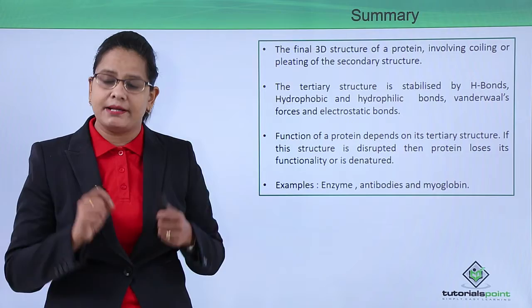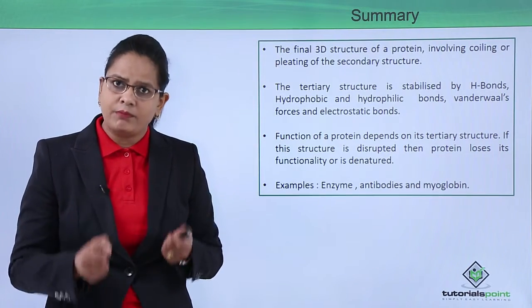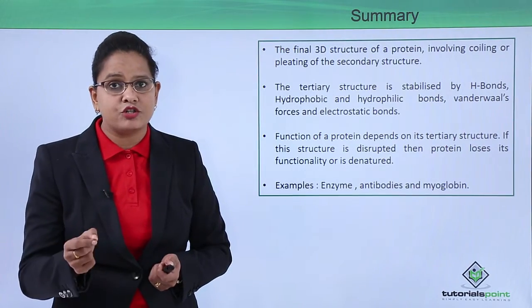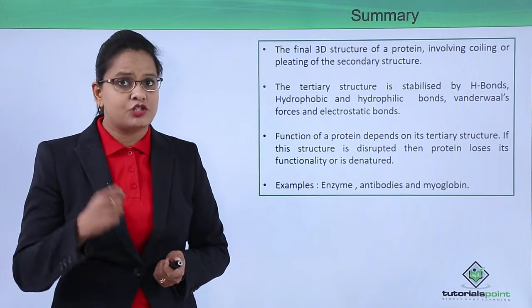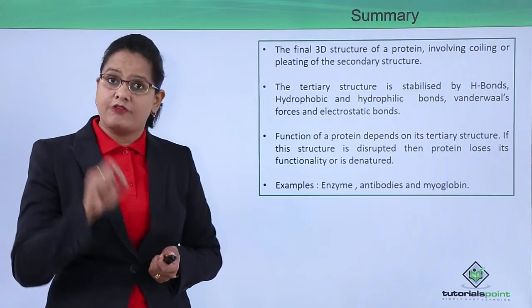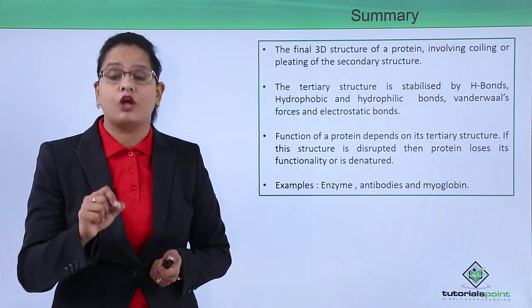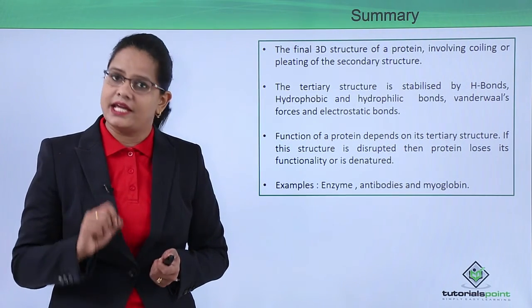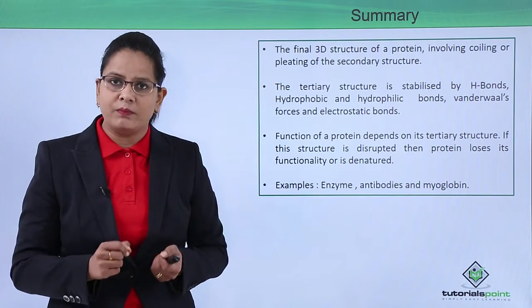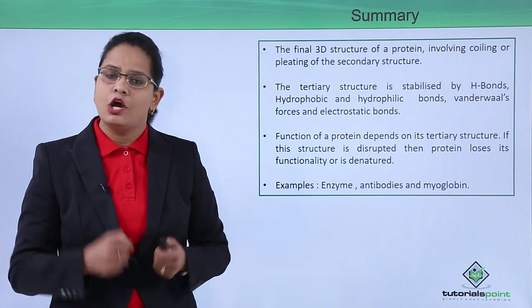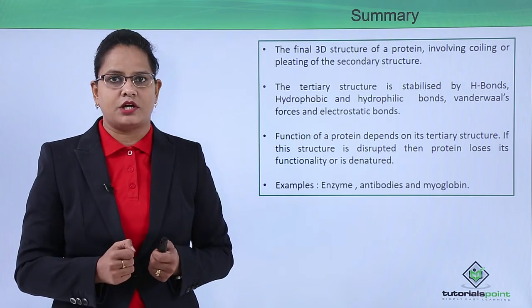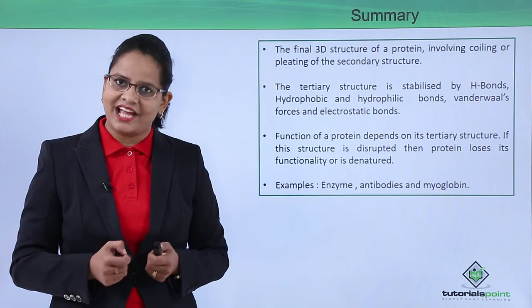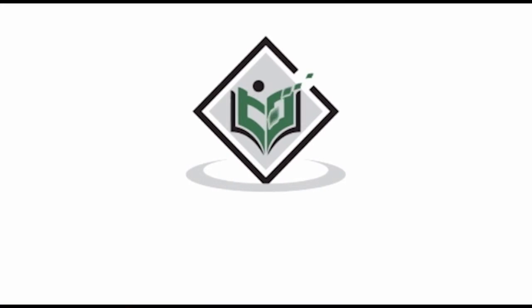To summarize: the tertiary structure is a three-dimensional structure formed by the folding of the secondary structure. It is stabilized by hydrogen bonds, Van der Waals bonds, electrostatic forces, and other forces. The function of a protein depends on its tertiary structure, and if it is heated it gets denatured. Examples include myoglobin, plasma proteins, and enzymatic proteins. In the next video we will start with the quaternary structure of the protein. Thank you — TutorialsPoint, simply easy learning.